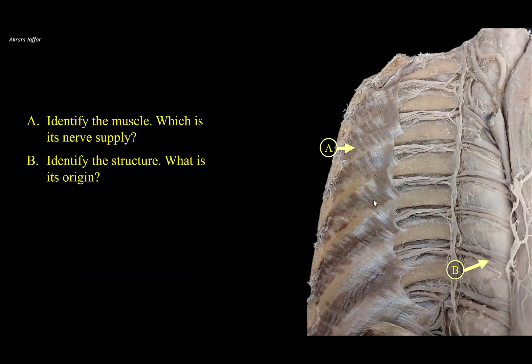Identify the muscle, its nerve supply, and identify structure B and its origin. This is the inside of the posterior thoracic wall. The deepest layer of intercostal muscles, attached to the inner surfaces of adjacent ribs, is the innermost intercostal muscle. Note that the intercostal neurovascular bundle disappears as it approaches this layer because the neurovascular plane is located between the internal intercostal and the innermost layer. This layer is restricted to the middle two-fourths of the intercostal space — it does not extend posteriorly to the vertebral column or anteriorly to the sternum. Like any other intercostal muscle, these fibers are supplied segmentally by intercostal nerves.